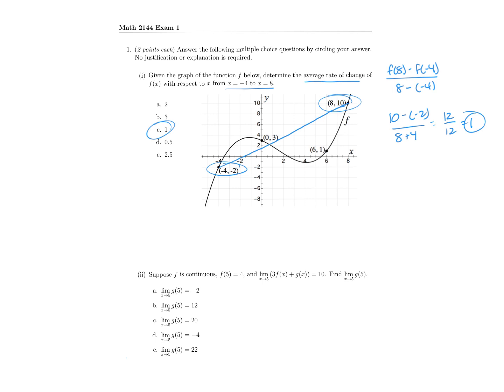On to the next part. Suppose that f is continuous, f of 5 equals 4, and we have this limit as x is approaching 5 equal to 10, and we want to find this limit here. Because f is continuous, we know that the limit as x is approaching any value — in this case 5 — is going to be equal to f of 5. So what the limit is approaching is the defined point of that function, meaning the limit of f of x as x approaches 5 is equal to 4.